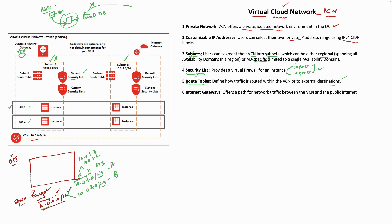Now we'll talk about a few gateways that are very important. What is a gateway? A gateway is a network node — think of it like a router used in telecom — that connects two networks with different transmission protocols together. A gateway serves as an entry and exit point, just like a gate. All data must pass through or communicate with the gateway prior to being routed.